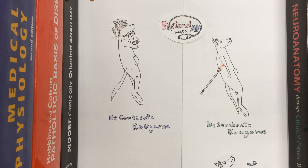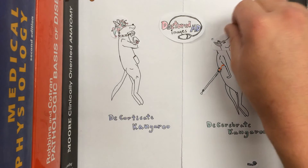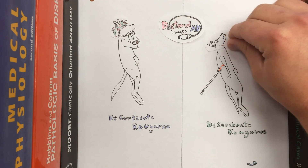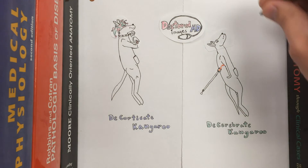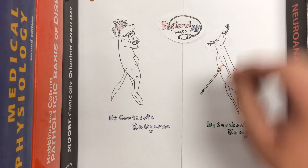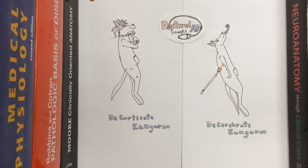Decerebrate posturing occurs due to a loss of the red nuclei. You can see the sad kangaroo here has had his red ruby taken away. This has caused his arms to be extended by his sides, his wrists flexed back, and pushed against his sides as well. Additionally, the head will be in an extended position backwards because the neck is extended. You can remember this sad decerebrate kangaroo has had his ruby taken away and is being forced to celebrate. The ruby being taken away means the lesion is occurring either at or below the red nucleus, and that is why this has a more guarded outcome than decorticate would.